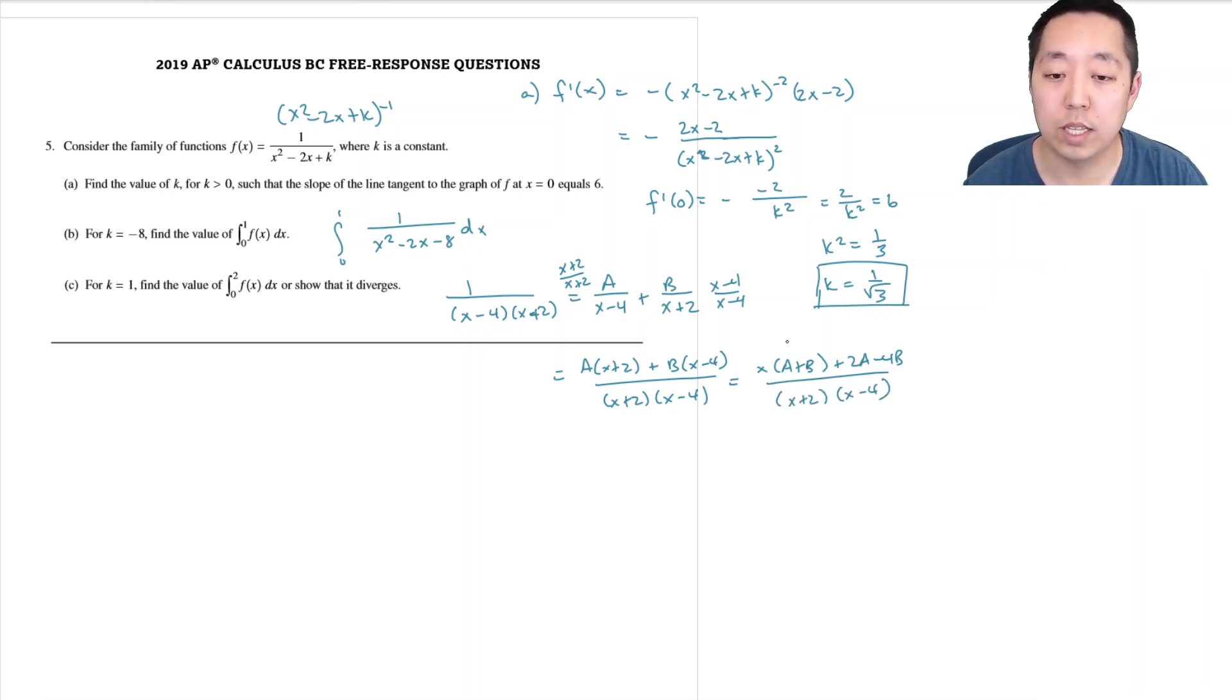That is x times (A plus B) plus (2A minus 4B) over (x plus 2)(x minus 4). Since this has to equal 1, the numerator has to equal 1 for all values of x. That means A plus B would have to equal 0, and 2A minus 4B would have to equal 1. So B equals negative A, which gives 6A equals 1, so A equals 1 sixth and B equals negative 1 sixth.